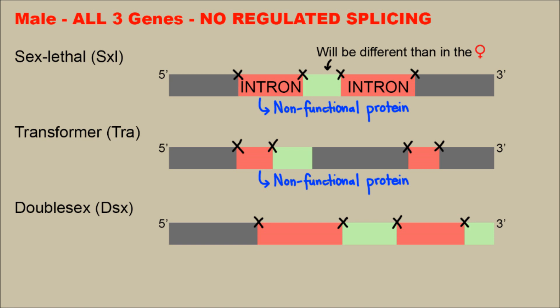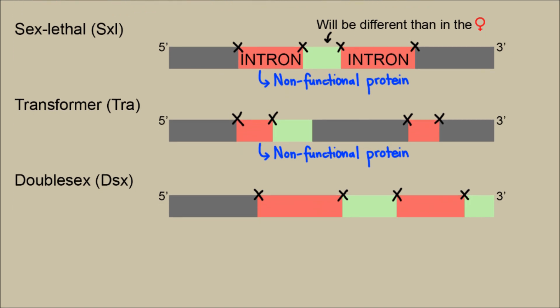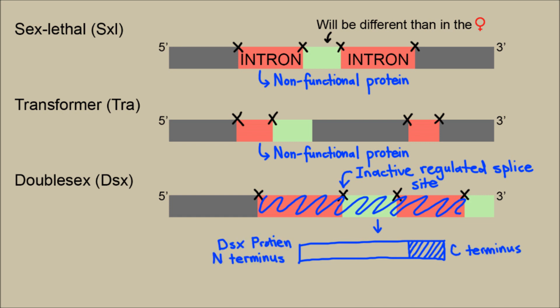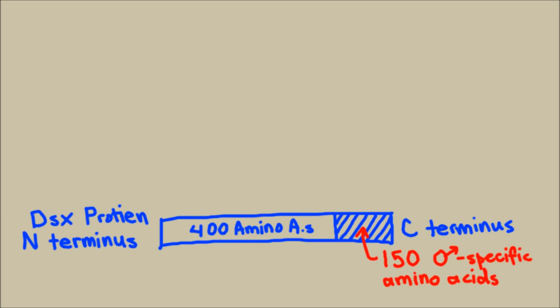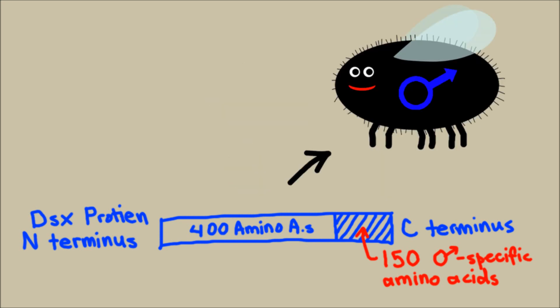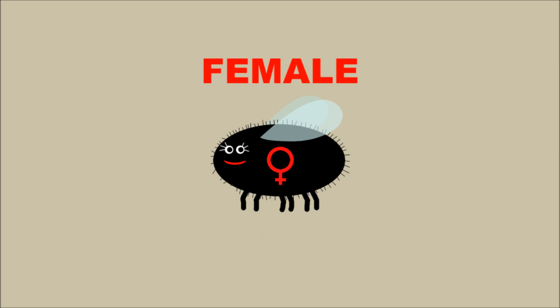Since the male has no regulated splicing and these two cuts don't occur, this whole portion of mRNA gets sloppily cut out by the ruthless spliceosome, disregarding the middle portion. So a double sex protein gets produced. This is the N-terminus and the C-terminus. Starting at the N-terminus, you have a section 400 amino acids long, which is the same in the male and in the female. However, at the C-terminus, you will find 150 male-specific amino acids. These male-specific amino acids turn off female differentiation genes, and so you get a male fruit fly.